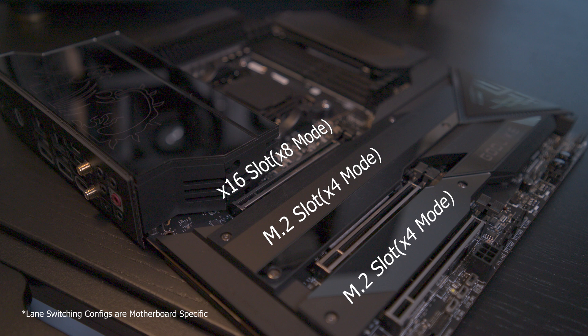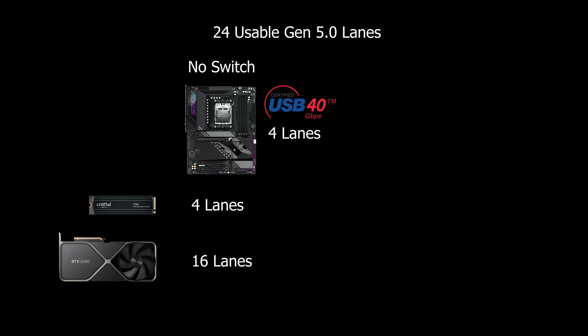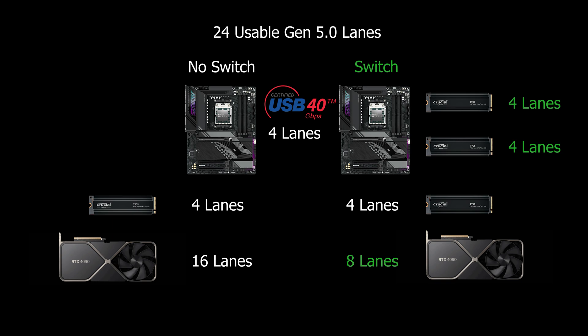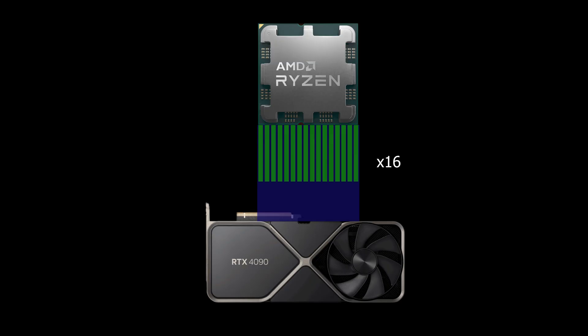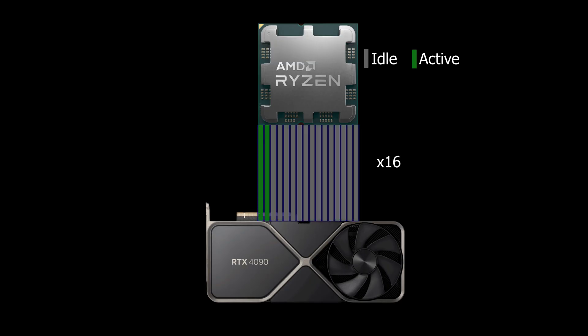Switching lanes from the x16 slot is a pretty effective way to use the lanes from your CPU for other devices. Because PCIe is an efficient protocol, most of the time the majority of lanes in a x16 slot aren't being used — it'll drop down to the amount of lanes needed for the data being transferred.